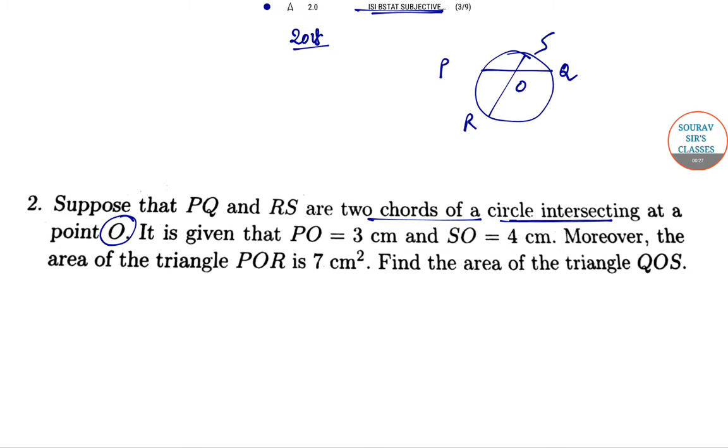Given that PO, that piece part, PO is 3 and SO is 4. I should have drawn it a little bit higher, so 3, this is 4.